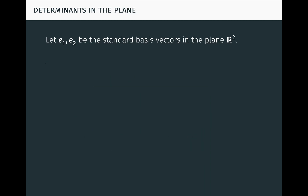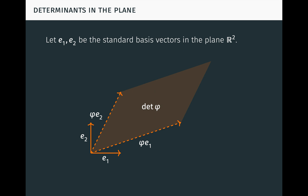As an example to help visualize the determinant, let e1 and e2 be the standard basis vectors in the plane R2. Then the determinant of a linear transformation phi on the plane is just the oriented area of the parallelogram determined by the vectors phi(e1) and phi(e2), as seen here.